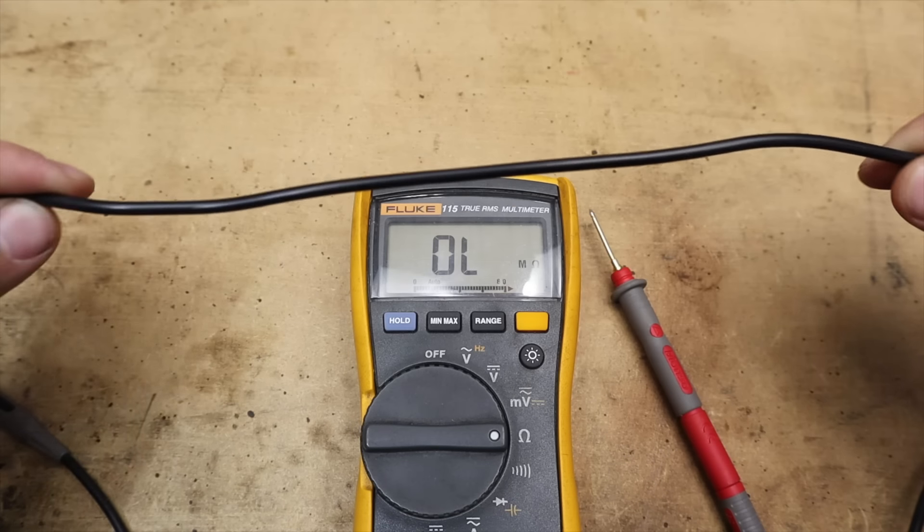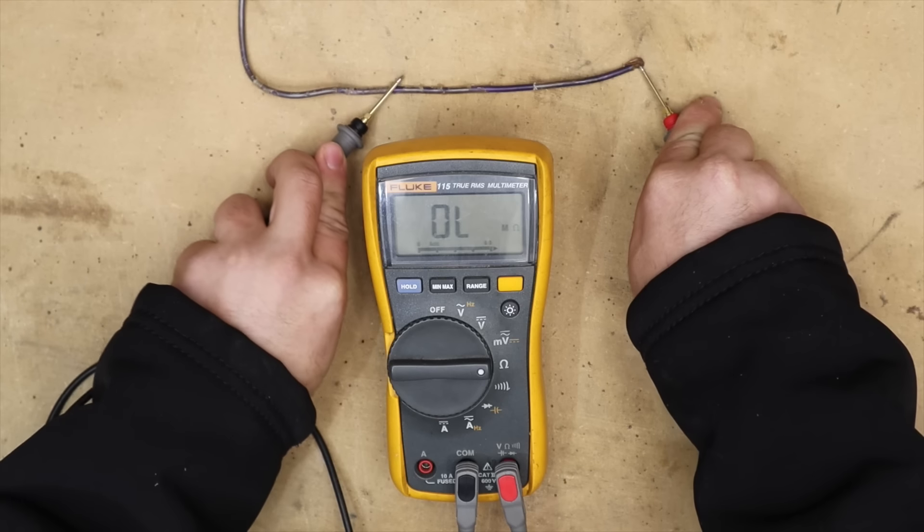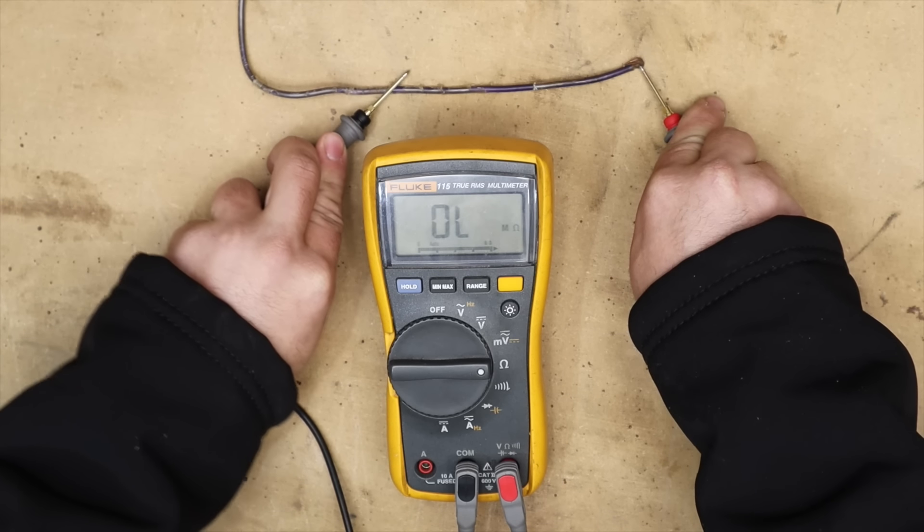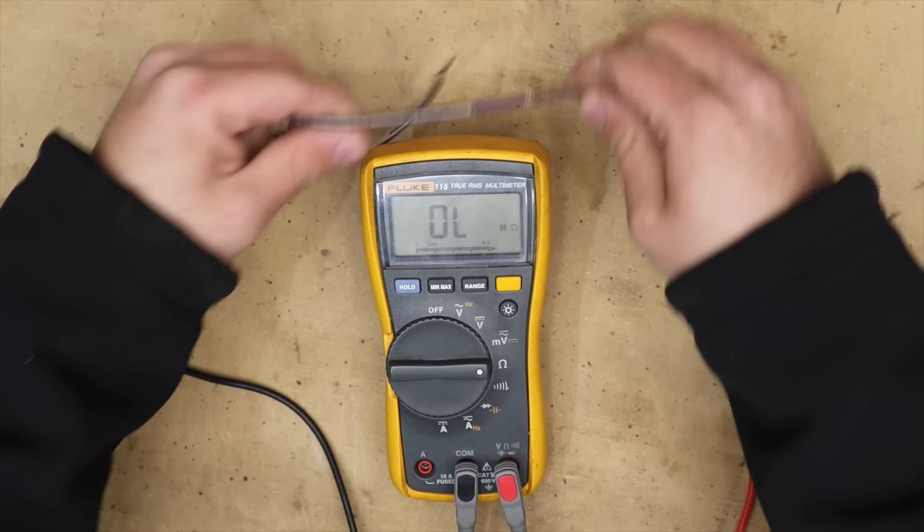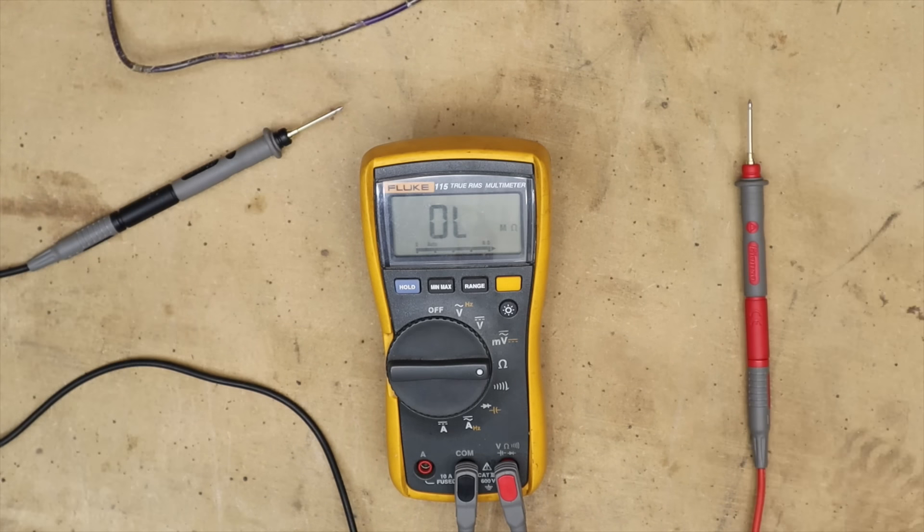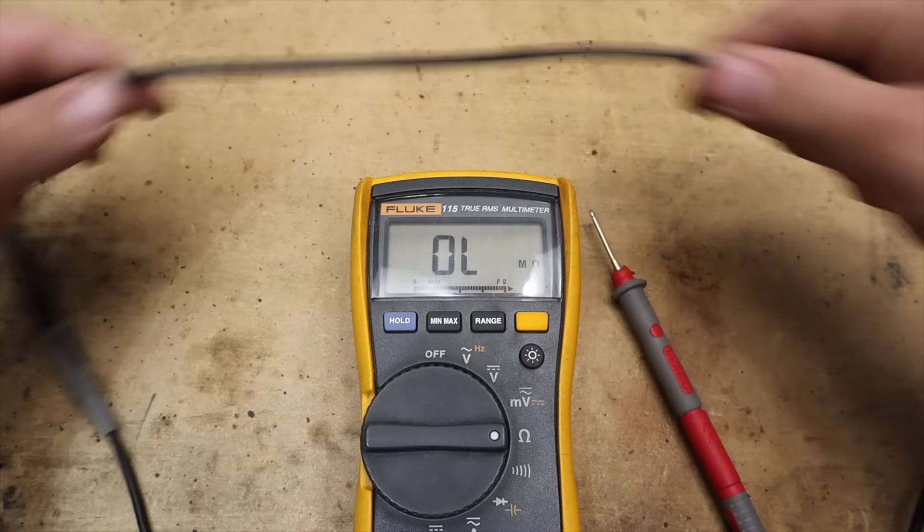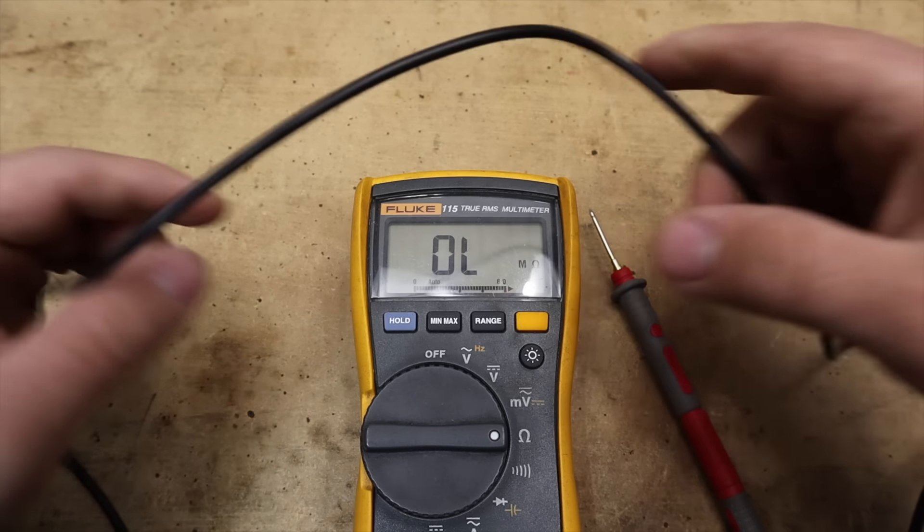If we place the probe on the rubber however we get OL meaning open loop. This is because little to no current can flow through the rubber, which is why we use it to protect us from the wires and we use it to insulate wires. In other words it's very difficult for electricity to pass through rubber.